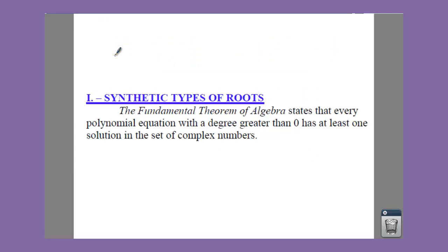We have something called the fundamental theorem of algebra that states that every polynomial equation with a degree greater than zero has at least one solution in the set of complex numbers. So if you have a degree of one, you have at least one zero. If you have a degree of two, you have at least two zeros and so on.